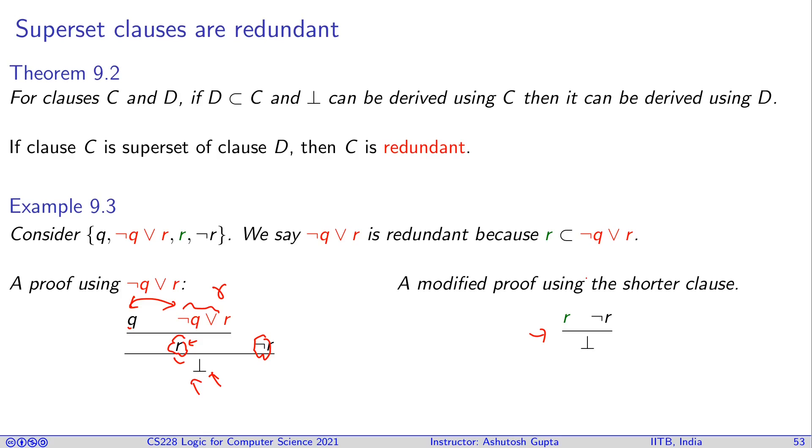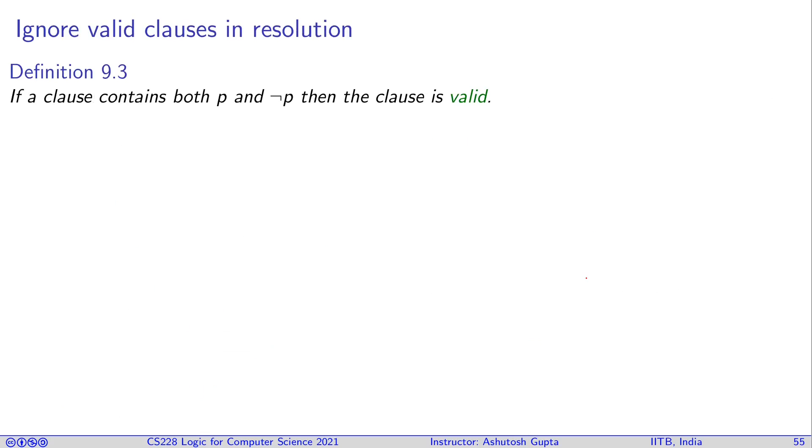So, you want shorter clauses. If a clause contains both P and not P, then the clause is valid. This we have seen in the previous discussion also. If a valid clause contributes in deriving false, the descendants must participate in some resolution step with pivot P.